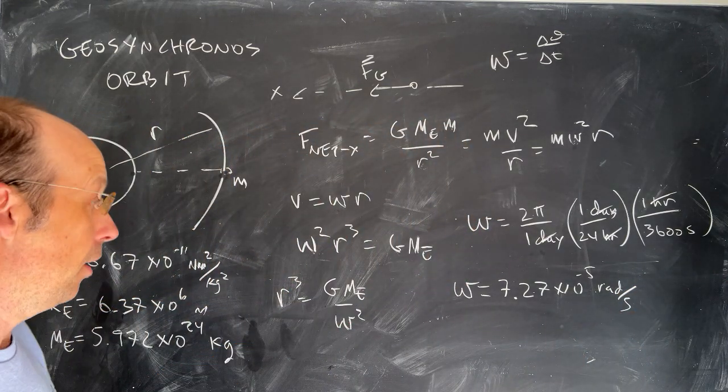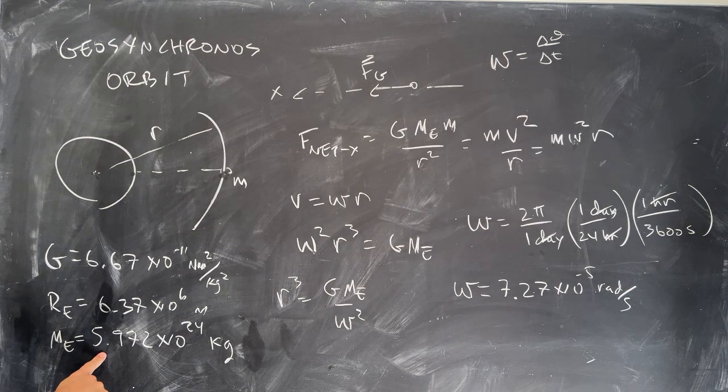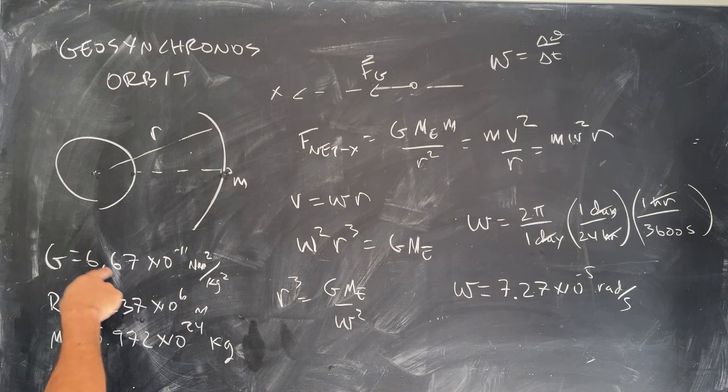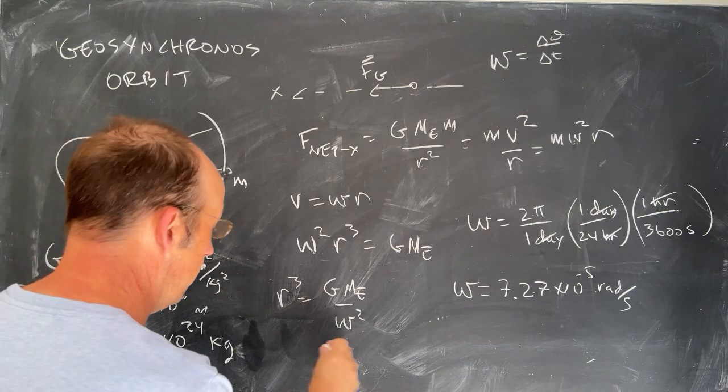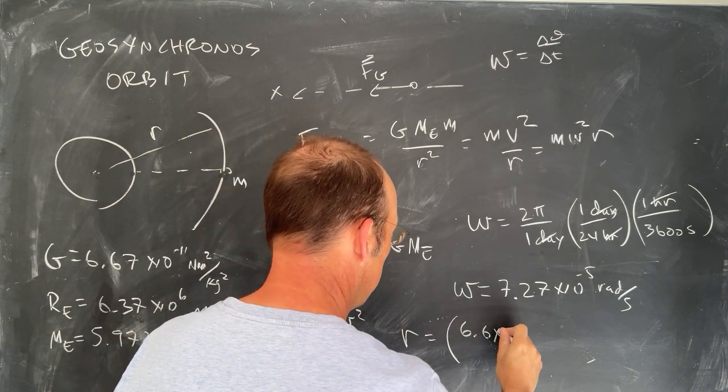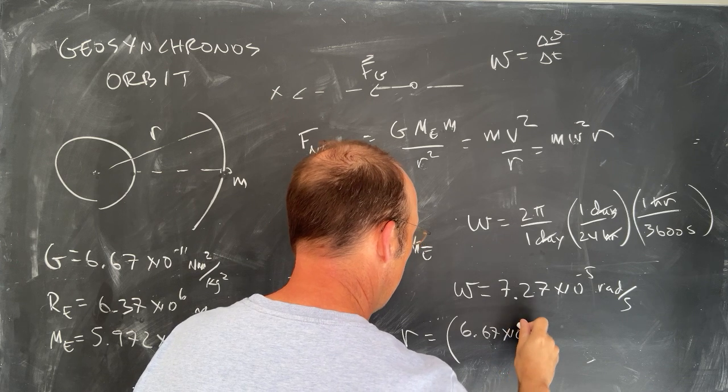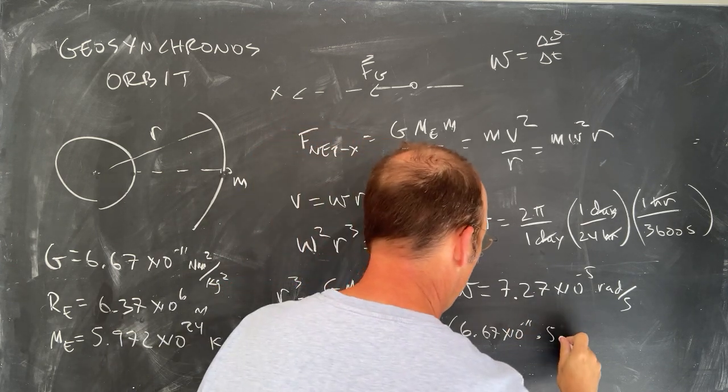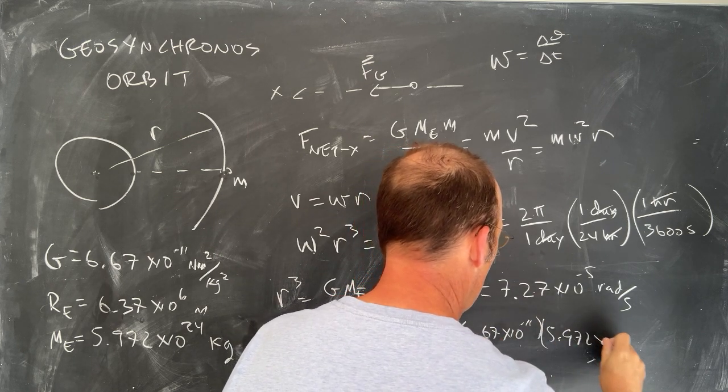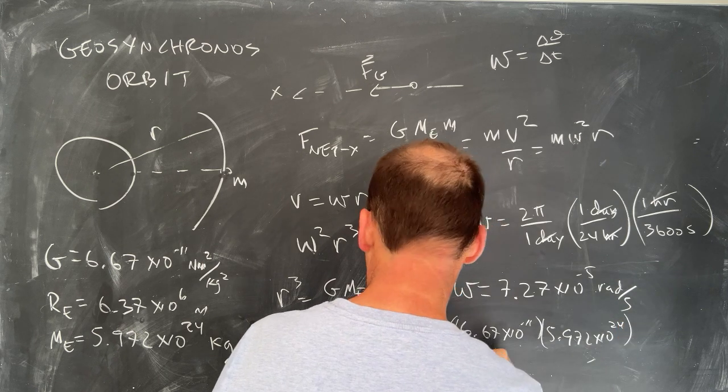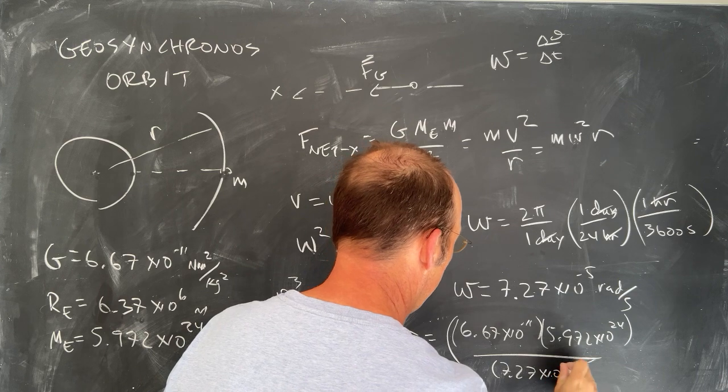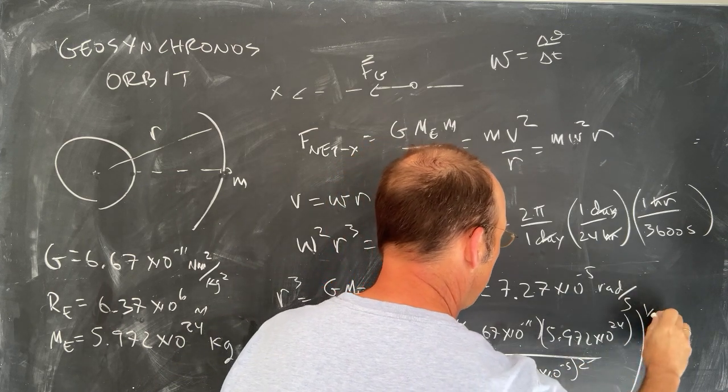Now I can put that in here and calculate r. So I know the mass of the earth is 5.972 times 10 to the 24th. The radius of the earth we're not going to use just yet. And then G is that. So I can put r is going to be equal to G, 6.67 times 10 to the negative 11th times the mass of the earth, 5.972 times 10 to the 24th divided by omega squared, 7.27 times 10 to the negative fifth squared, and then all that to the one-third power.